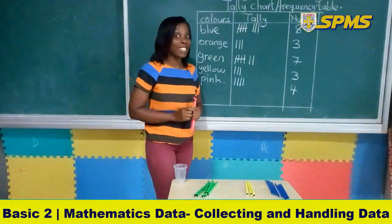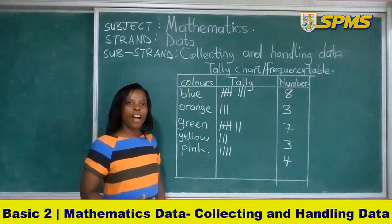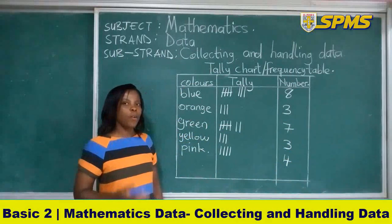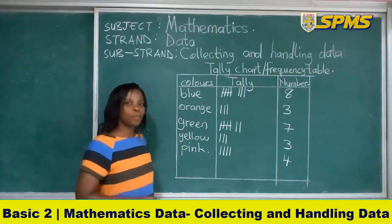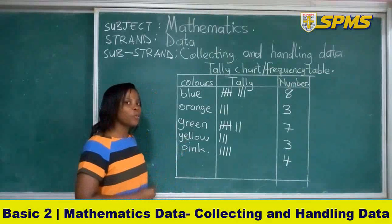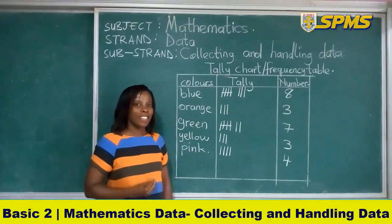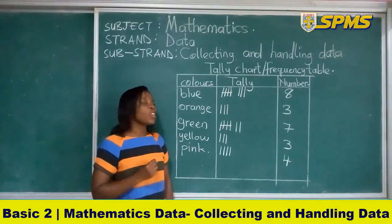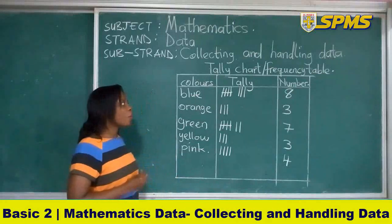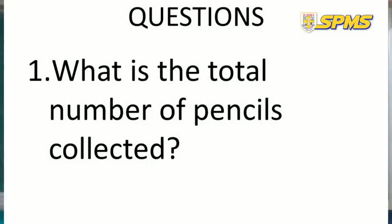So we are done tallying our raw data on our tally chart, or the frequency table. Isn't that interesting? Okay children, we have our data of the colors of pencils represented on our tally chart, or the frequency table. The next thing we are going to do is use the table to answer certain questions.